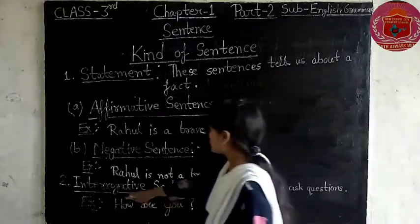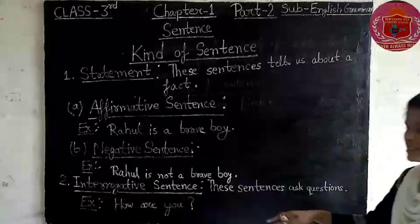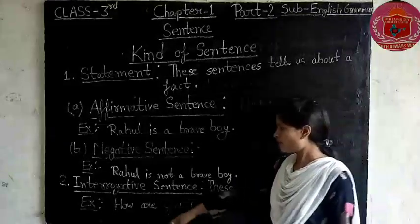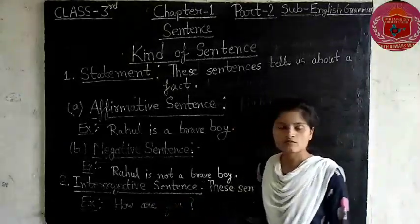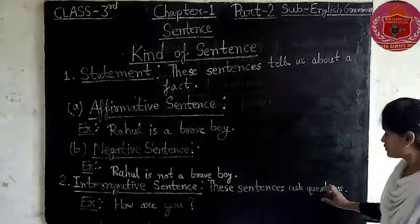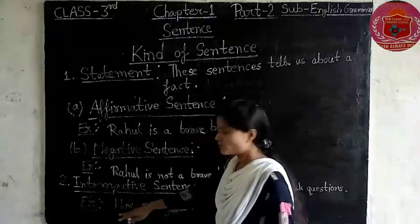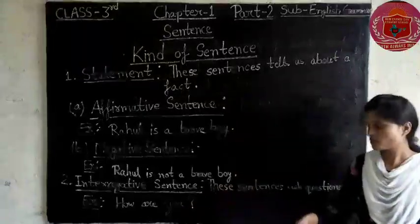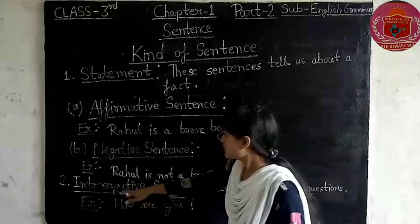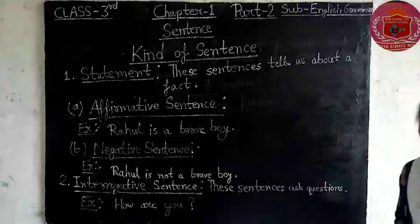Next one is the interrogative sentence, that is Prasamashat Bhakti. In interrogative sentences, sentences ask some questions. Examples of interrogative sentences are: 'How are you?' In interrogative sentences, the word asks a question, and a question mark is required for notation of interrogative sentences.